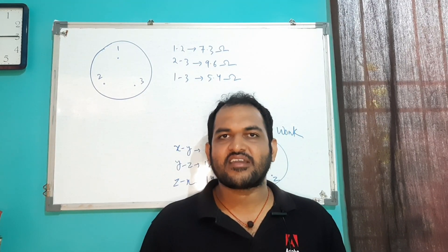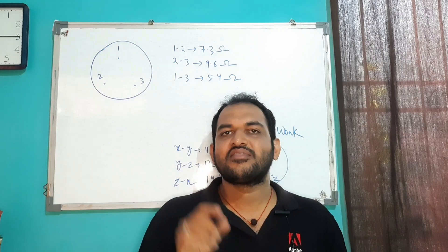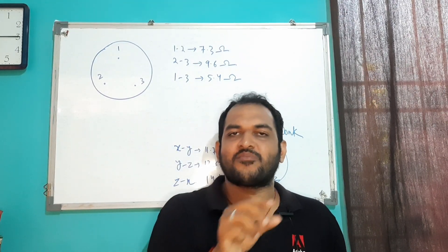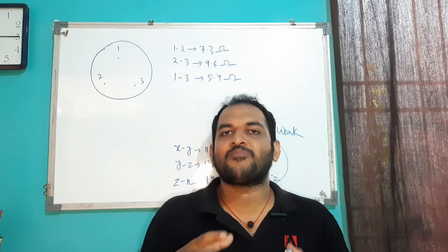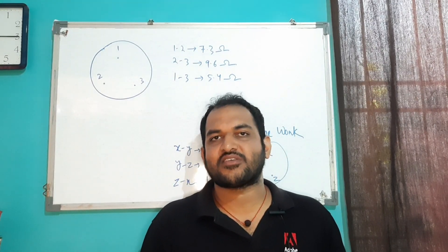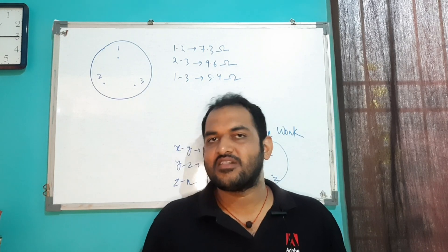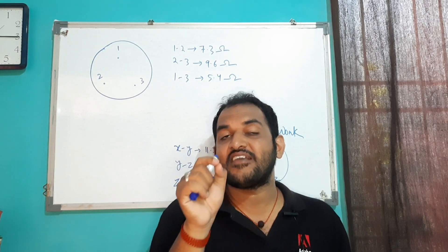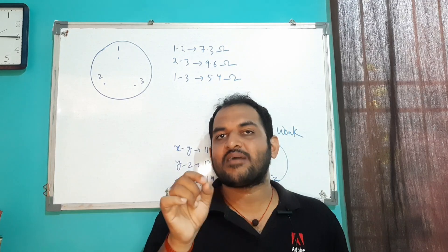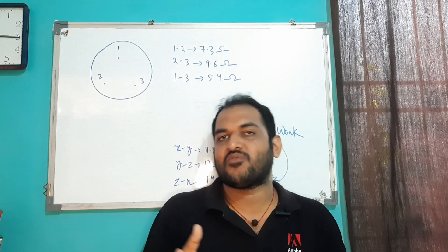If you have to work with 3 terminals, you should know how to identify C, S, R terminals of a compressor. C means common, S means starting, and R means running.